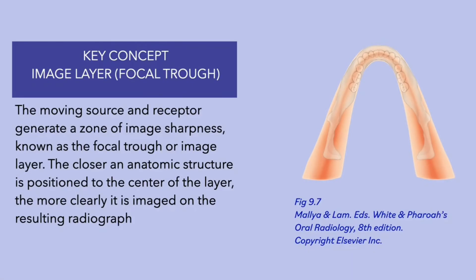A key concept in panoramic imaging is the formation of the image layer or focal trough. By moving the source and the receptor, we generate a zone of image sharpness. This zone is referred to as the image layer or focal trough. Objects that are located within this image layer cast sharp images. The closer an anatomic structure is located to the center of the layer, the more clearly it is imaged on the panoramic radiograph.